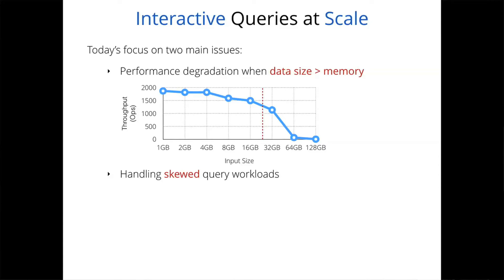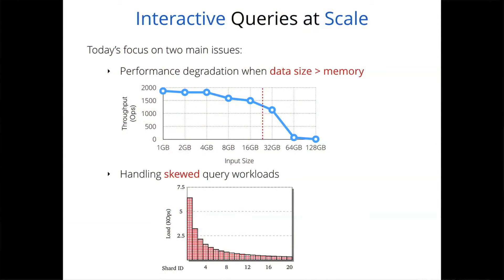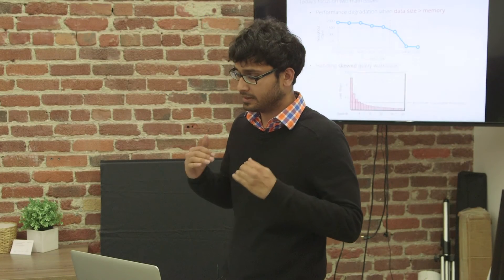The second problem is catering to skewed query workloads. We're working with a distributed system that scales horizontally using partitions — multiple partitions residing on multiple servers. The load distribution across these partitions is non-uniform and can be heavily skewed toward one partition. The problem arises when skew results in queries going well over the maximum sustainable throughput of a given partition.